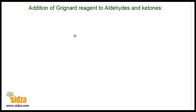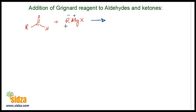Addition of Grignard's reagent to aldehydes and ketones. Aldehydes and ketones add on the Grignard's reagent to form addition products which, upon hydrolysis with water in acidic medium, will produce alcohol. So aldehydes and ketones react with the Grignard's reagent.